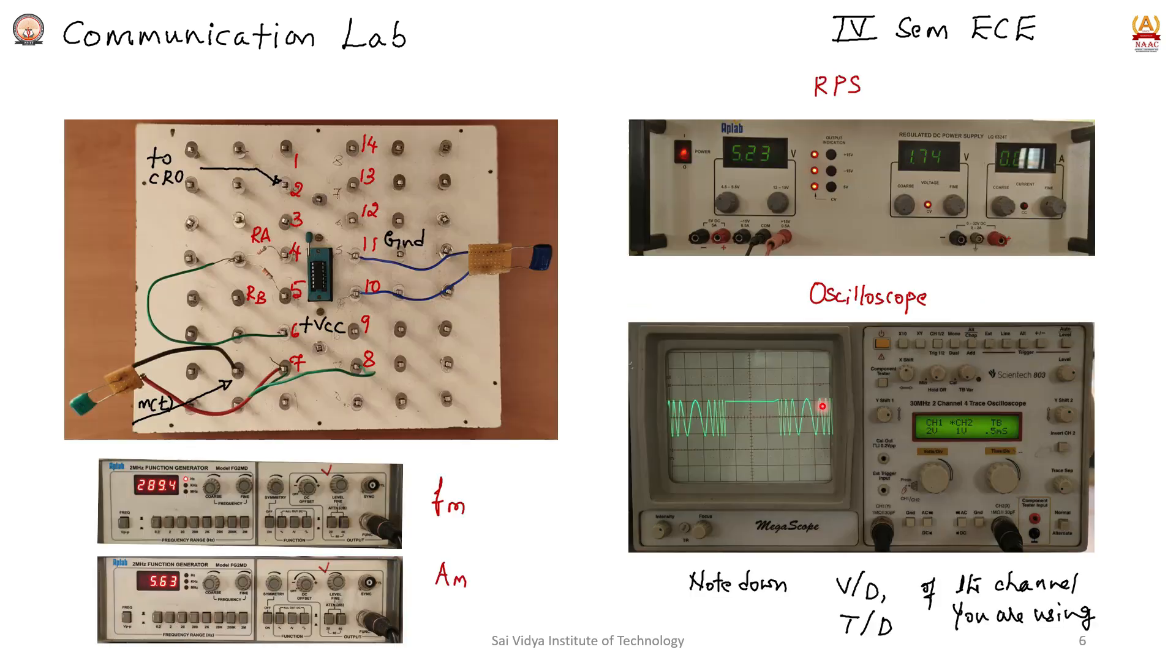Note down all values. This is the circuit diagram where the integrated circuit is connected with discrete components. On the function generator, the message signal frequency is approximately 289 hertz with an amplitude of 5.63 volts.